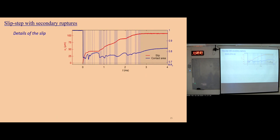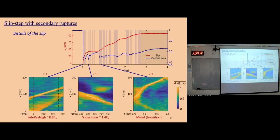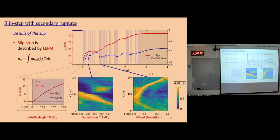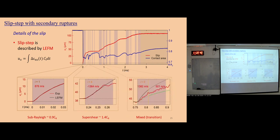Let's consider the details of the slip. We ask whether this slip is described by LEFM. I show three typical ruptures: the first is sub-Rayleigh, the second is super-shear, and the third is mixed — starting as super-shear and transitioning back to sub-Rayleigh. Based on the speed and fracture energy of these secondary ruptures, we can calculate the slip from the LEFM solution, and we find all of them are pretty consistent between the prediction and the experimental measurement.